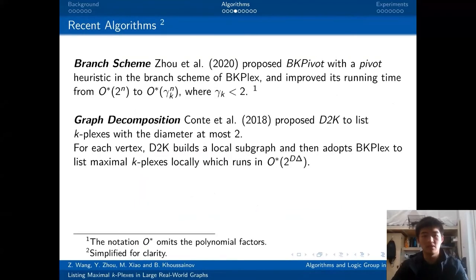There are also two recent algorithms from our competitors. The first one is BK-Pivot. The main contribution of BK-Pivot is its branching schema. BK-Pivot was proposed with the pivot technique in its branching schema, and BK-Pivot improved the trivial complexity to O*(gamma^n), where gamma is related to k, but strictly smaller than 2.